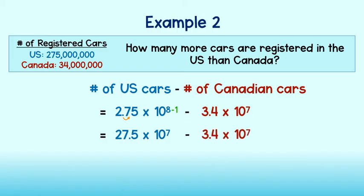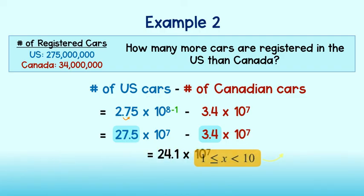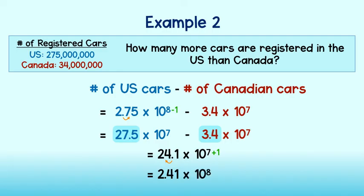Now we'll bring down the rest of the problem. 27.5 minus 3.4 is equal to 24.1, and we keep the common 10 to the seventh power. We want our answer in scientific notation, so this first factor must be greater than or equal to 1 but less than 10. So I will move the decimal point one place to the left to get 2.41. Since this factor got smaller by 1 power of 10, we must add 1 power of 10 to get 10 to the eighth power. There are 2.41 times 10 to the eighth power more cars registered in the United States than Canada.